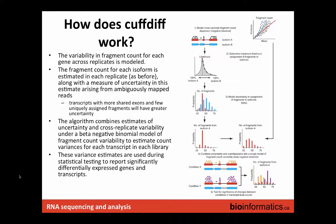So you get expression estimates expressed as FPKM-type measurements, but they've come from this very complicated probabilistic model. Then you can try to estimate differential expression between two samples — or ideally a large number of samples for condition A and B. The way it does that is by looking at the variability in fragment counts across the replicates. You're looking at the average distance between expression levels in the two conditions, but also the variability within those conditions. If they're very different and not very variable, they're more likely to be differentially expressed.